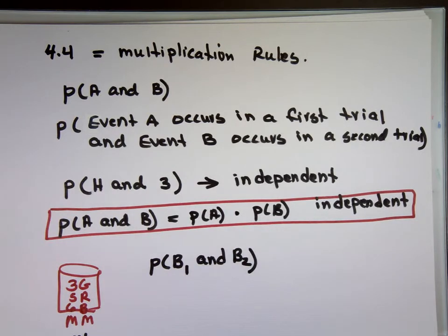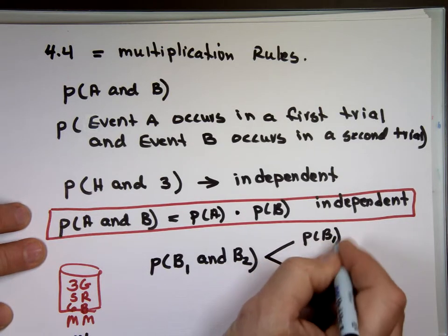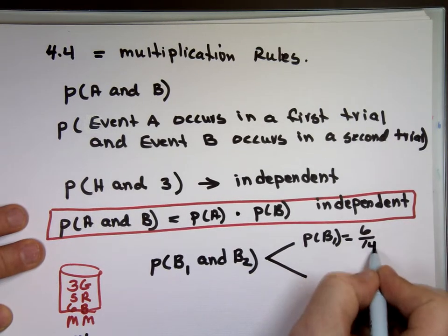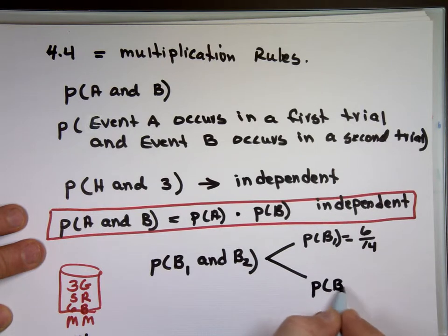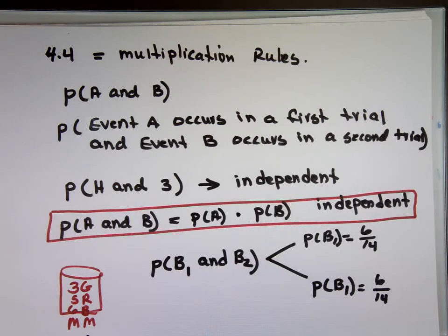Are these events independent of each other? Well, it depends. For the first event, when you reach in, what's the chance of selecting a blue on the first one? How many blue M&Ms do we have? Six out of 14. So to select a blue one on the first draw is 6 out of 14. Now, if the events are independent, that means if I reach in again to pick another blue one, my probability should still be 6 out of 14. So is my probability 6 over 14 or not? That's the key word: with replacement or without replacement.